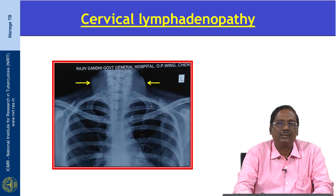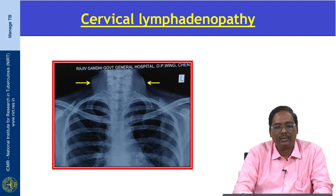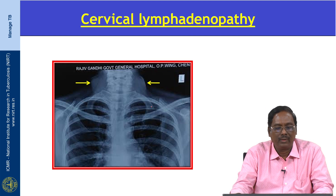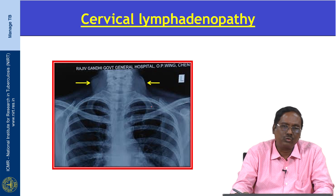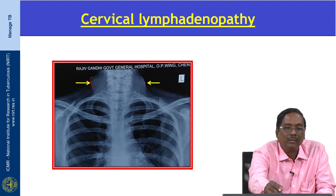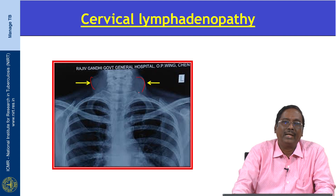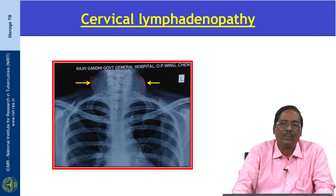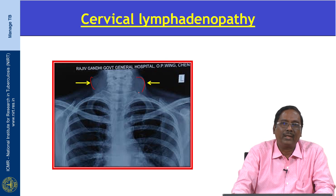The commonest extra-pulmonary TB presentation is peripheral lymphadenopathy, which accounts for 20 to 40 percent of extra-pulmonary TB cases. It is known as King's Evil. It is more common in children and females, and also seen in HIV-positive patients with low CD4 counts. On X-ray, soft tissue swelling on either side of the neck can identify cervical lymphadenopathy. Ultrasonogram can further assess node size, number, matting, and presence of caseous necrosis for diagnostic purposes.